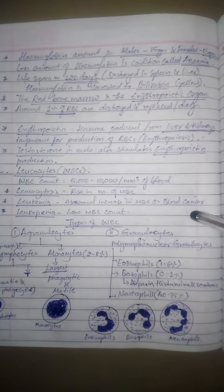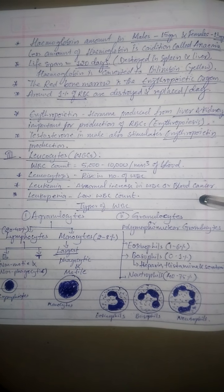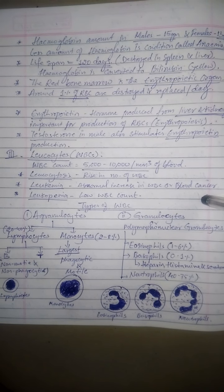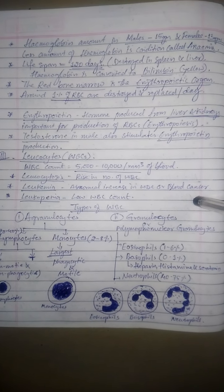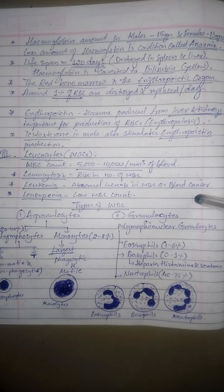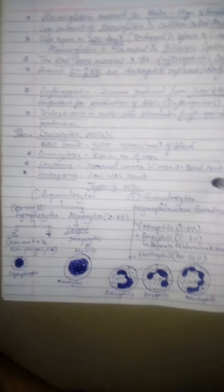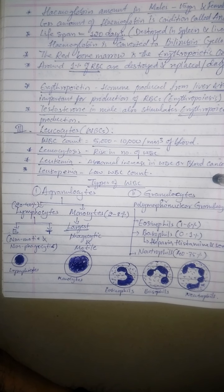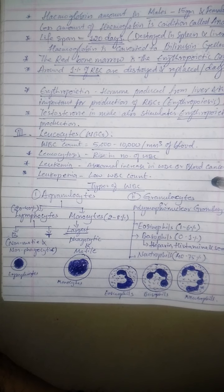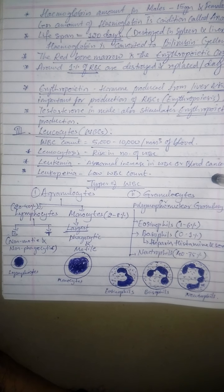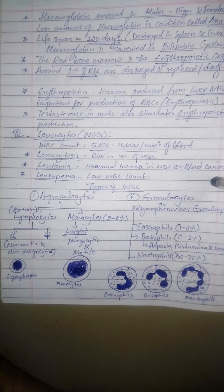There are two main types of WBCs: agranulocytes and granulocytes. Agranulocytes have a clear cytoplasm without any granular substance, whereas granulocytes have a lobed nucleus and granular substances in their cytoplasm. The two types of agranulocytes are lymphocytes and monocytes. Lymphocytes constitute around 20 to 40 percent of WBCs, and monocytes contribute around 2 to 8 percent.